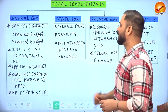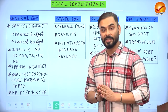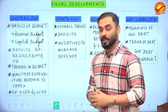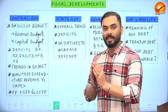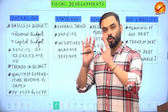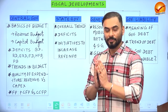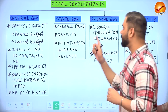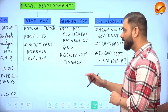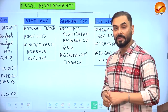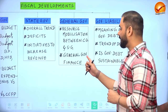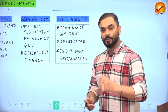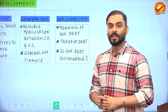For state governments, we will look at overall trends, deficits, and recent steps taken by states to increase revenue. After covering both center and state, we will combine them to look at India's overall fiscal position — called general government finances — and examine resource mobilization between center and state.